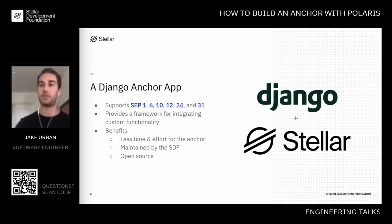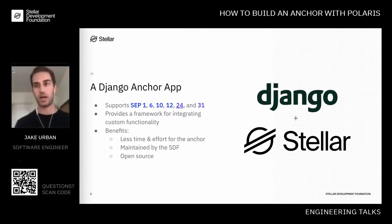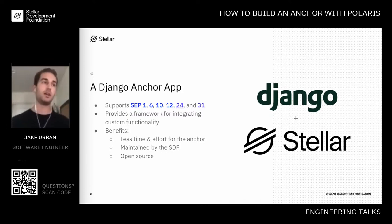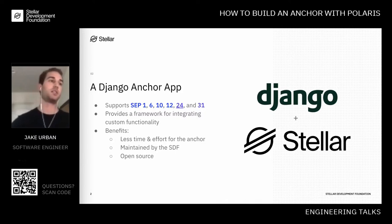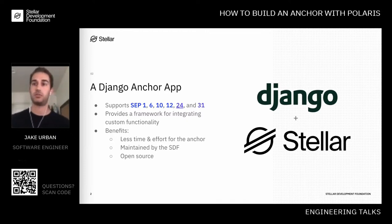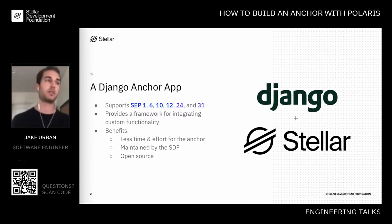The difference is that every anchor has pieces of functionality that are custom to them. So what Polaris does is implement the stuff that's standard — what everybody's going to do — and then it allows people to customize their own instances for their unique situation. Overall, it's less time for the anchor to build. People can typically get this up within an hour. The SDF maintains it, keeps it up to date with standards and SDK upgrades, and it's open source — everything is viewable on GitHub.